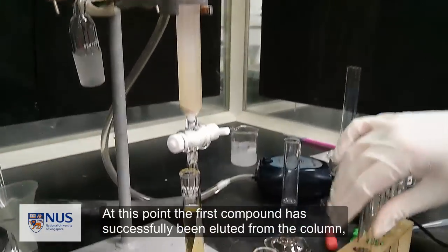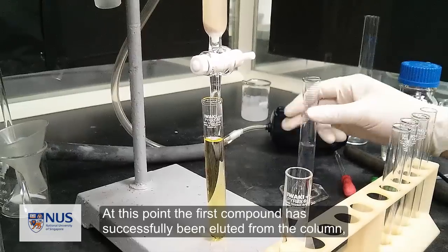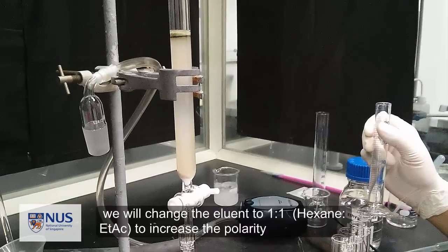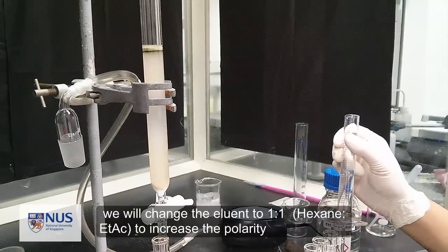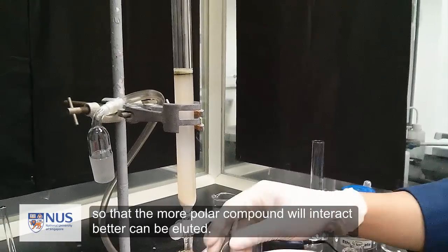At this point, the first compound has successfully been eluted from the column. We will change the eluant to a 1-to-1 hexane to ethyl acetate ratio to increase the polarity, so that the more polar compound will interact better and can be eluted.